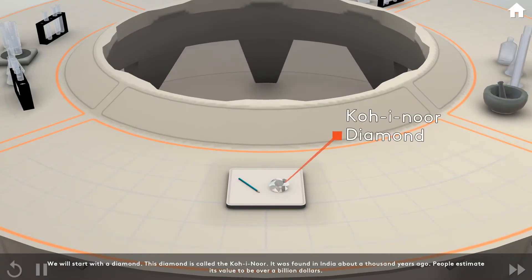This diamond is called the Koh-I-Noor. It was found in India about a thousand years ago.